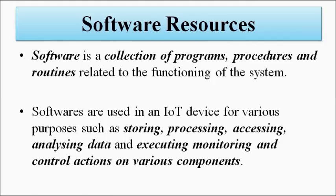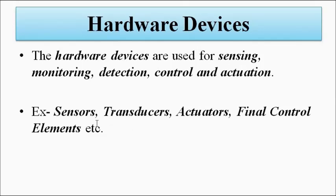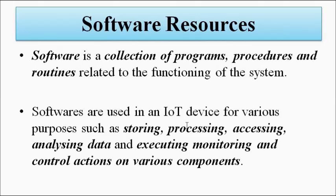Next is software resources. Software is basically a collection of programs, routines, rules, regulations, and procedures which determine the functioning of the whole IoT system — how the hardware devices will operate. We may have all these sensors, transducers, actuators, and final control elements, but how and when they will operate and what they will do is determined by the programs — the computer program installed in the microcontroller.